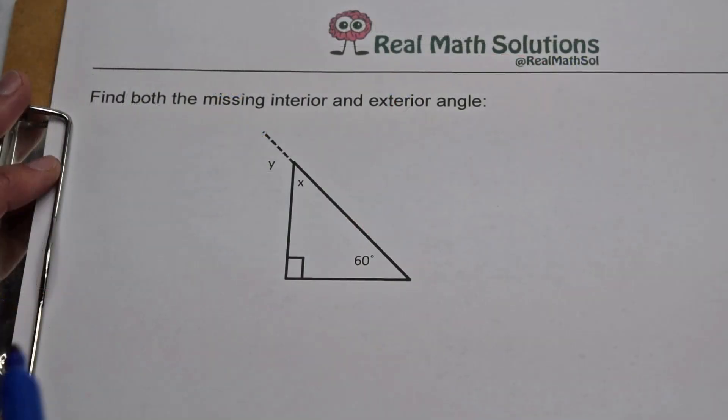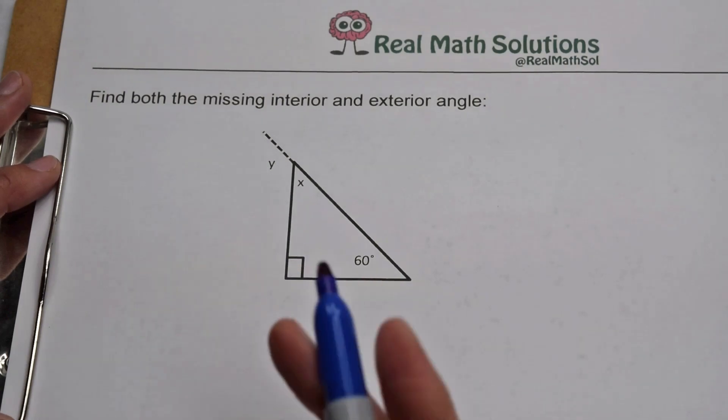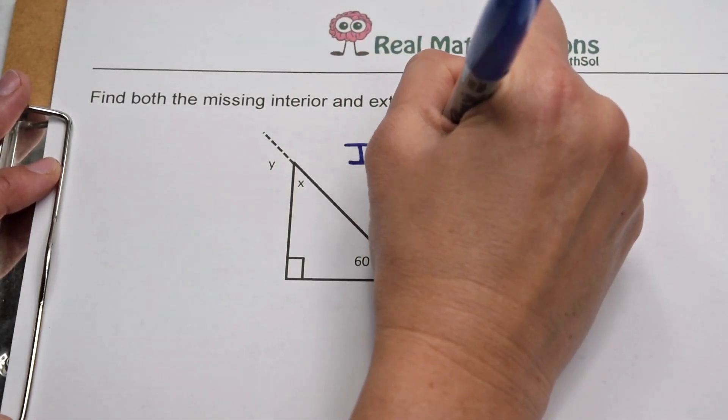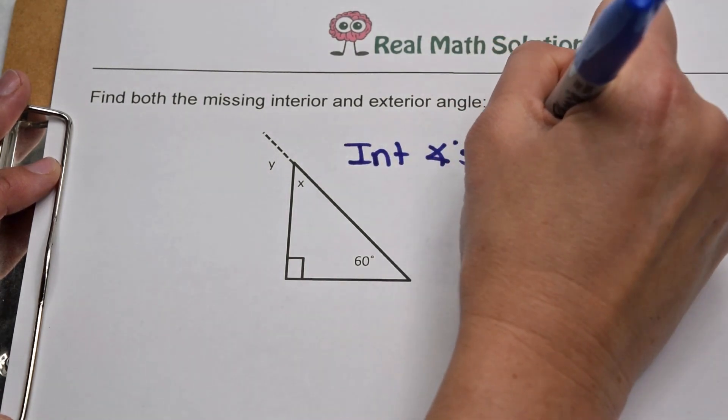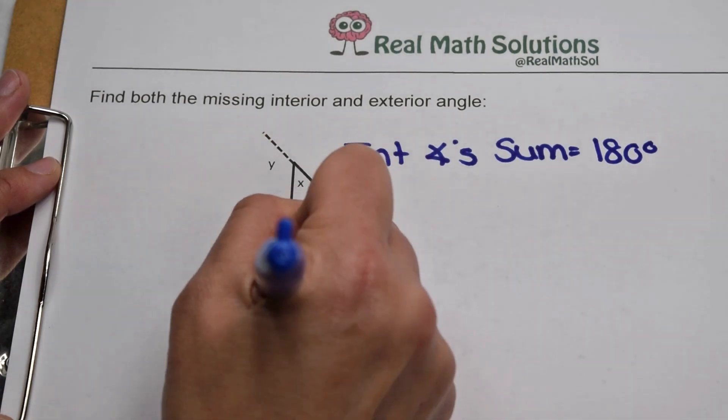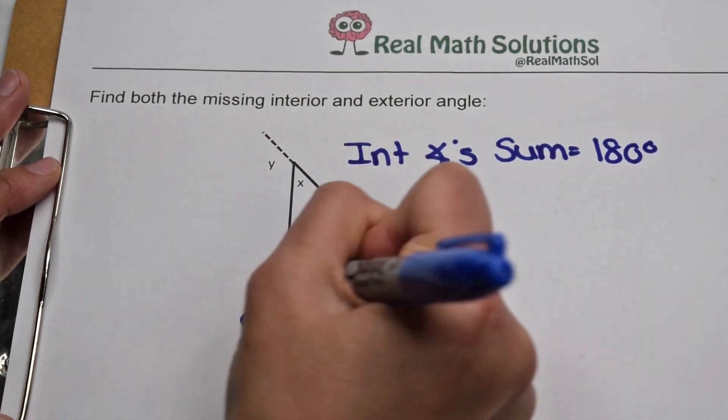Now let's combine what we know to find both a missing interior and an exterior angle. To start, we're going to find our missing interior angle. We know that triangles have an interior angle sum of 180. So we're going to use that to find our missing angle measure. This one is 60. We know this one in the corner is going to be worth 90.